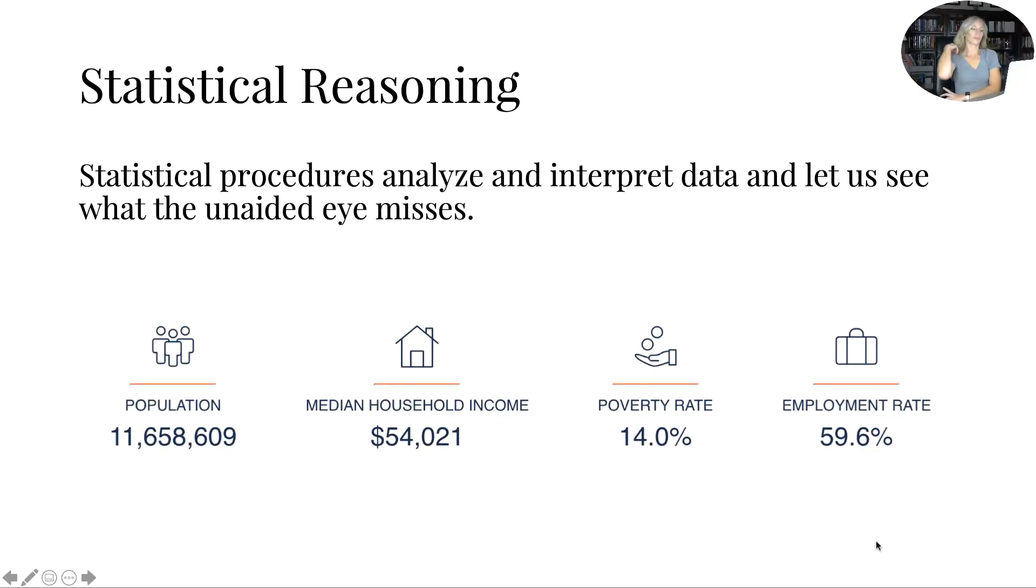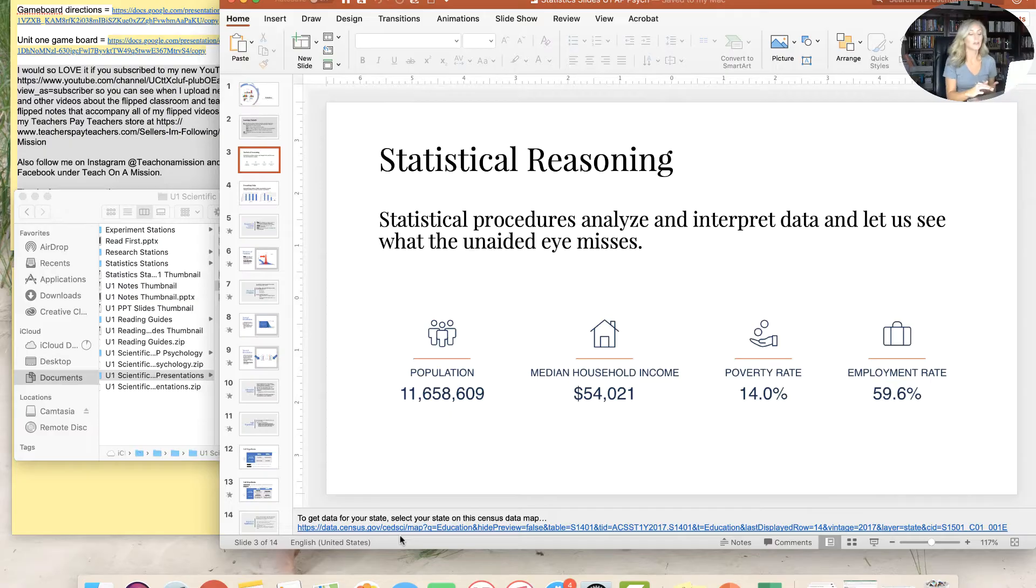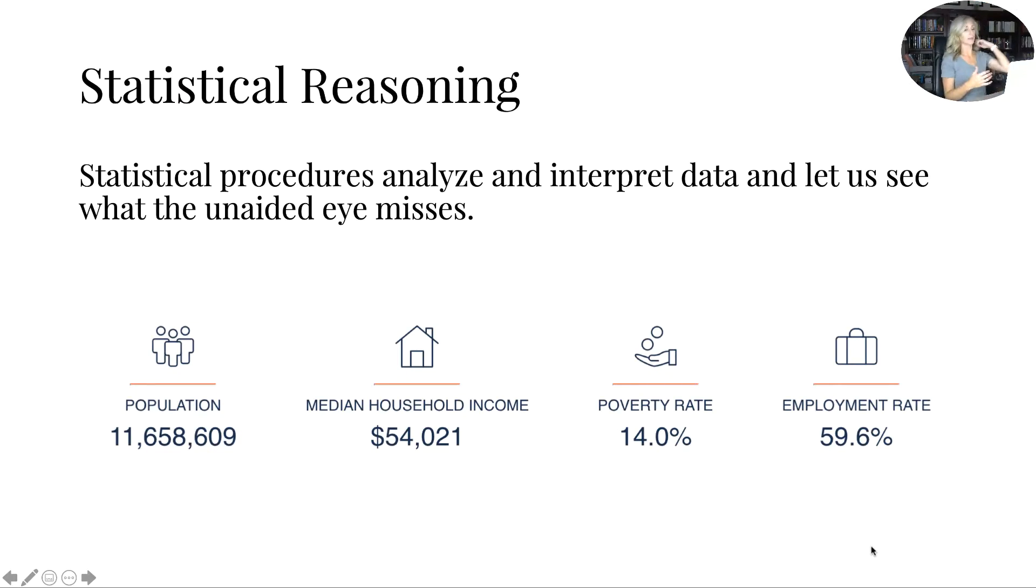Alright, so statistical reasoning and what we have to understand about this statistic stuff is that it's all about research, right? The stats in our research and how we can use numbers to display what it is our research has found. So we have statistical procedures that analyze and interpret data from our research and they let us see what the unaided eye might miss. So for instance, this is the census income for the state that I live in, which is Ohio. And I would encourage you to go to data.census.gov to see what that census information is for your state. But the population is over 11 million people. The median household income is $54,000. There's a 14% poverty rate as well as a 59.6% employment rate. Not unemployment, employment rates. Almost 60% of the population is employed.